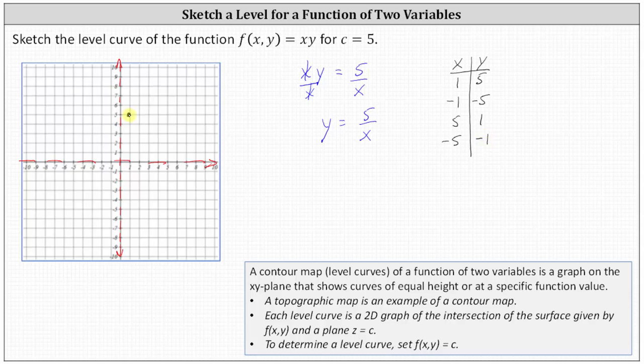Let's plot these four points. 1 comma 5, negative 1 comma negative 5, 5 comma 1, and negative 5 comma negative 1. So we know the curve is going to pass through these points and approach the horizontal and vertical asymptotes.